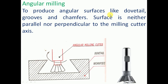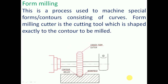Angular milling is used to produce angular surfaces like dovetail grooves, chamfers, etc. The surface to be milled is neither parallel nor perpendicular to the milling cutter. Here, a dovetail shape is to be produced on the work piece, and an angular milling cutter with the corresponding angular shape is used. The cutter axis is neither parallel nor perpendicular to the work surface.